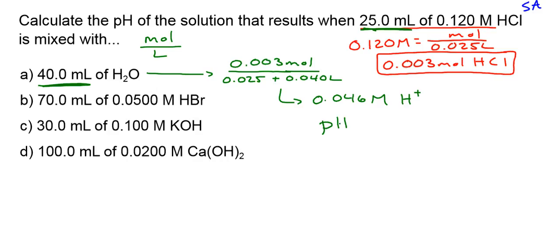So then pH equals negative log 0.046, and I get a 1.34 pH. So that's simply a dilution.